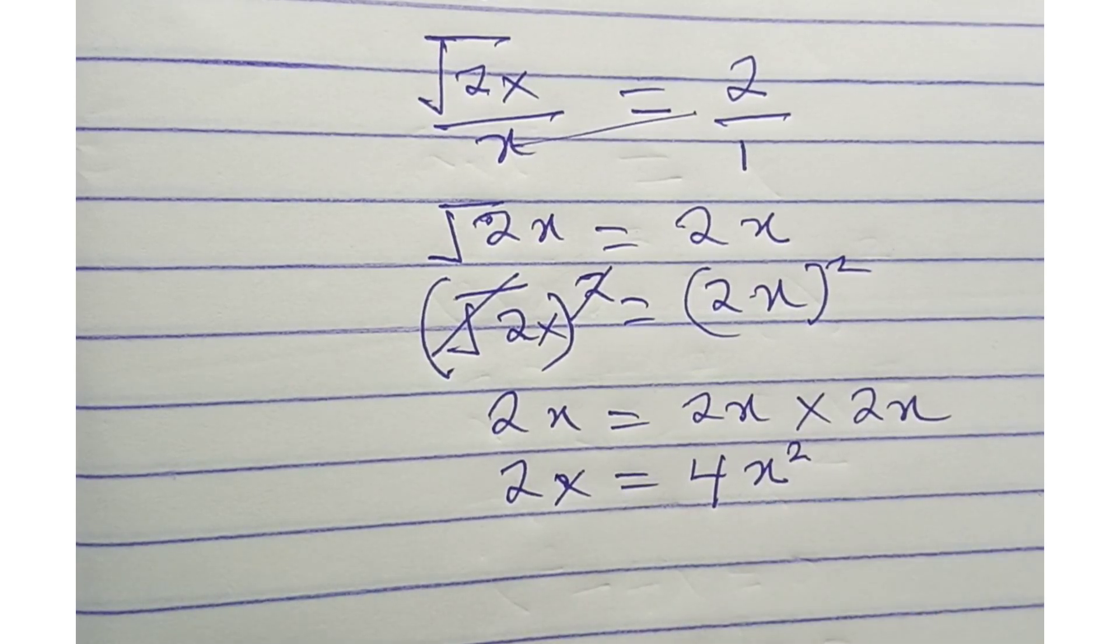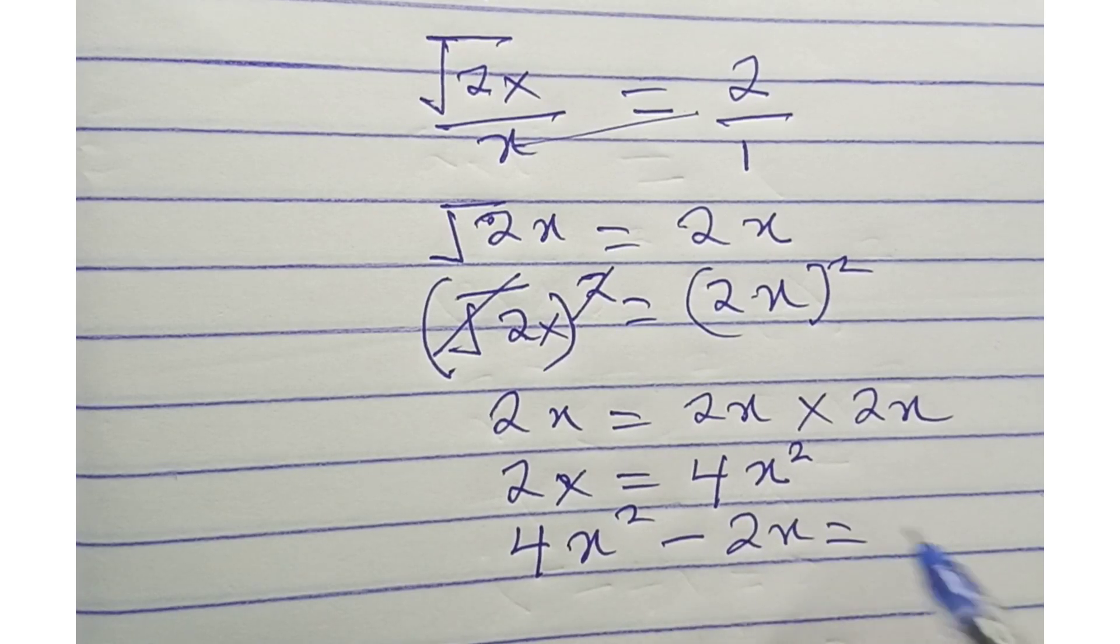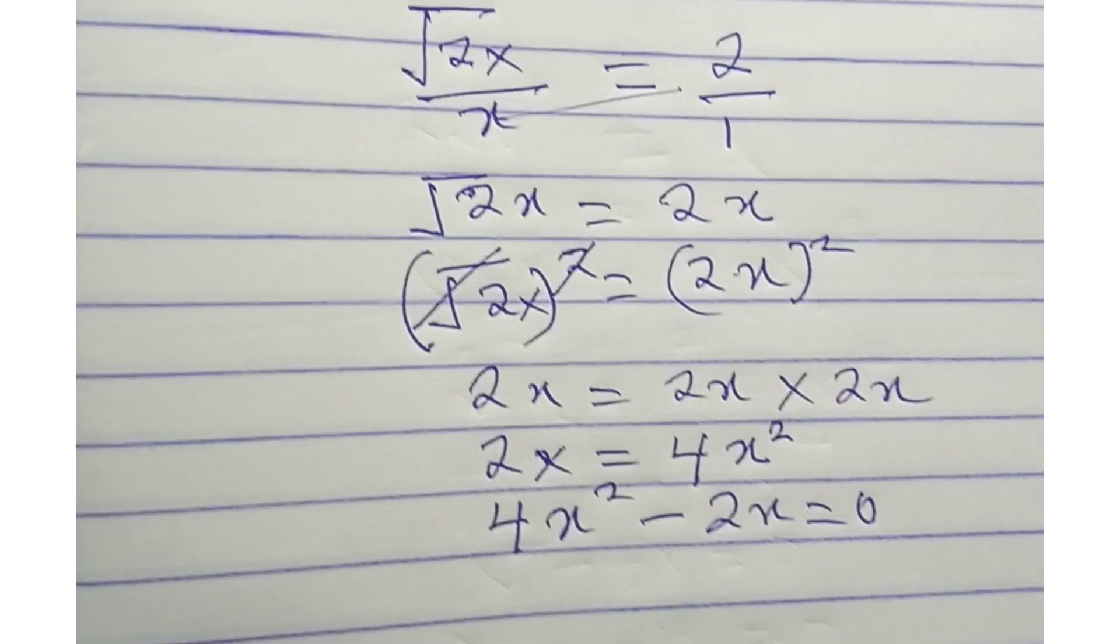So we can rewrite this as 4x squared minus 2x equals zero. That is all we have.